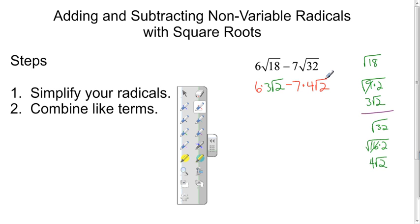And when performing these multiplications, I can only multiply factors that are on the outside together. I can multiply the 6 times the 3, but I can't multiply the 3 times the 2. Similarly, I can multiply the 7 times the 4, but I can't multiply the 4 times the 2.